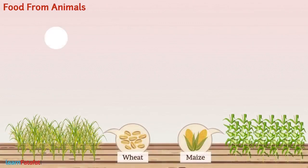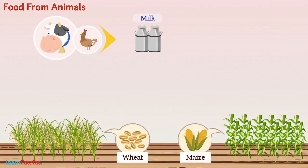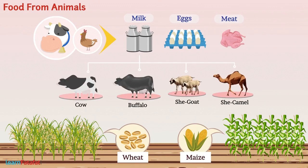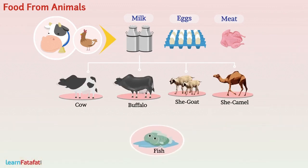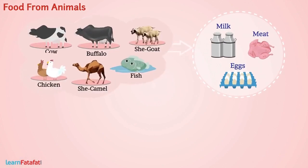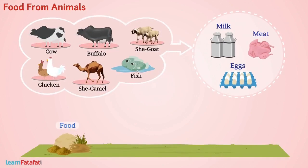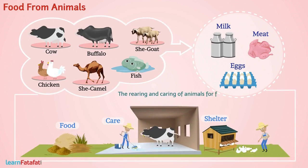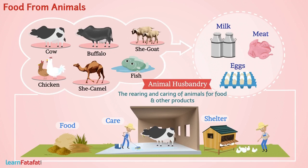Food from Animals. Like plants, some animals also provide us with different kinds of food. Cow, buffalo, she-goat, and she-camel provide milk. Fish is a major part of the diet in coastal areas. In order to obtain food from animals, these must be provided with proper food, shelter, and care. The rearing and caring of animals for food and other products is called animal husbandry.